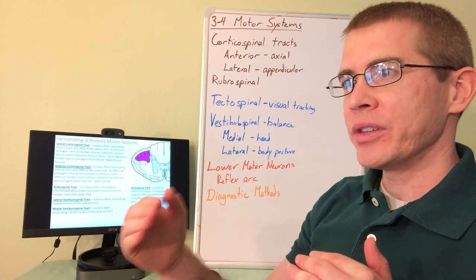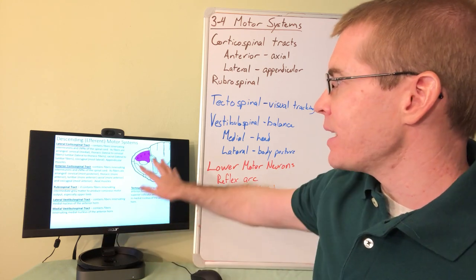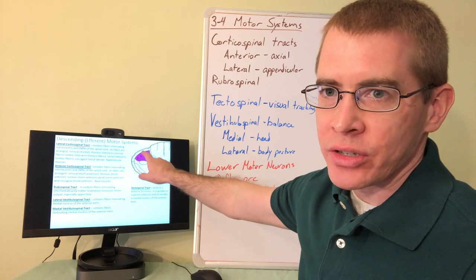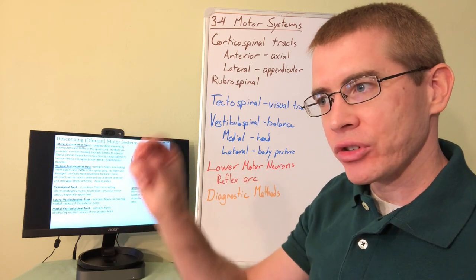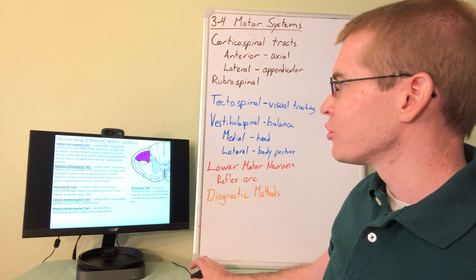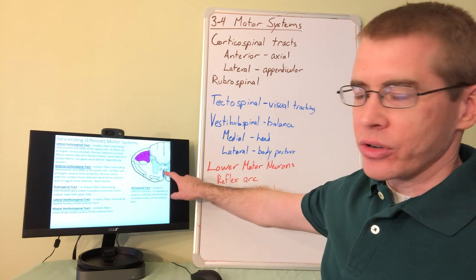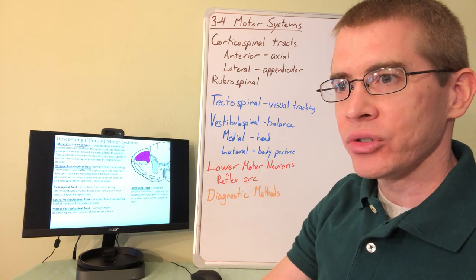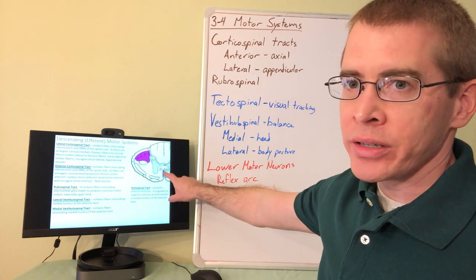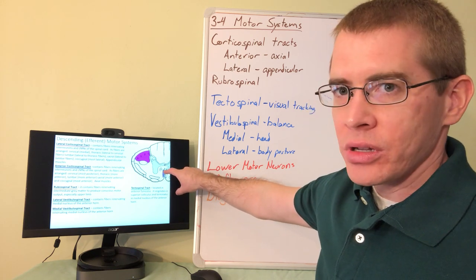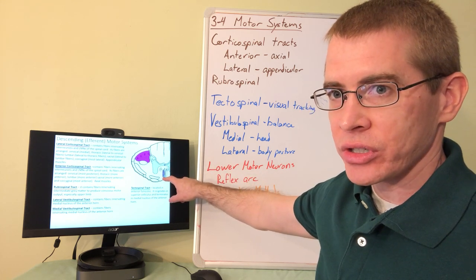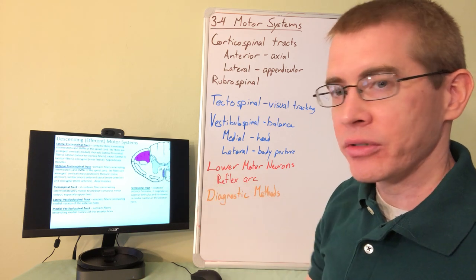As we descend through the spinal cord, the corticospinal tract shrinks in size because cervical and thoracic fibers have already been given off by the time we reach the lumbar segment. The anterior corticospinal tract, responsible for axial muscles, is smaller because there are fewer axial muscles. It is likewise somatotopically organized, with cervical fibers closest to the center and sacral fibers closest to the perimeter of the spinal cord.